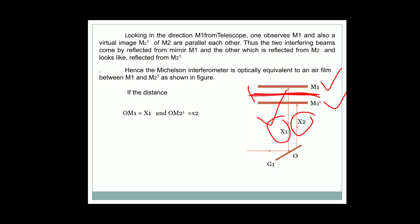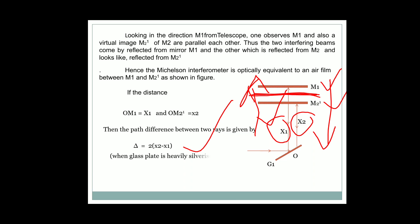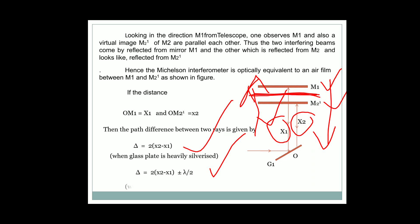The path difference between the two reflected rays is delta = 2(X1 − X2), where OM1 is taken as X1 and OM2 as X2. Since the mirror is heavily silverized and glass plate G1 is very thin, an additional path difference of λ/2 is added according to Stokes' law. So the total path difference is delta = 2(X2 − X1) ± λ/2. If this equals Nλ, a bright ring occurs; if it equals (2N+1)λ/2, a dark ring occurs.